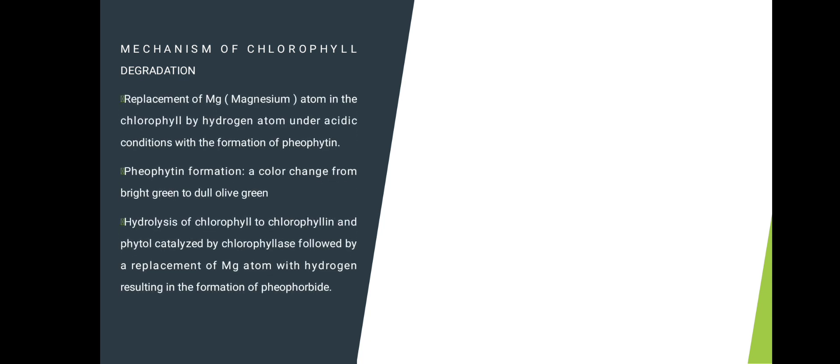The mechanism of chlorophyll degradation involves replacement of the magnesium atom in chlorophyll by a hydrogen atom under acidic conditions, with the formation of pheophytin. Pheophytin formation causes a color change from bright green to dull olive green. This is followed by hydrolysis of chlorophyll by chlorophyllase.